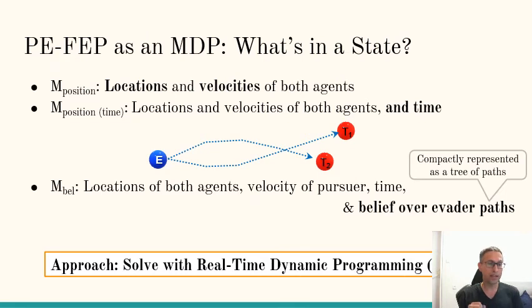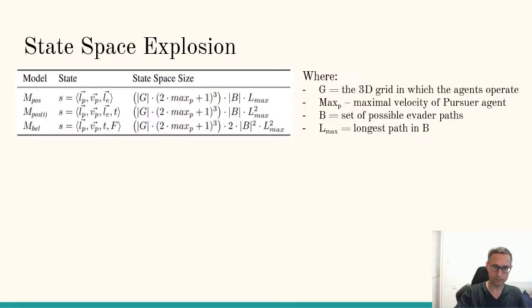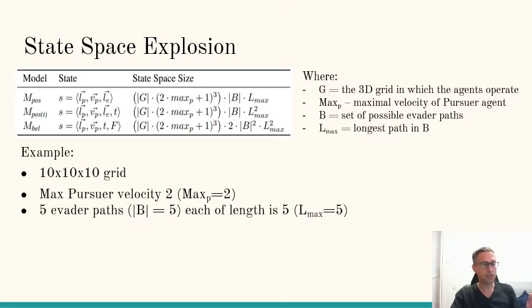But back to solving it. We can take each of these modeling and run RTDP to solve it. But the problem is that these modeling incur a very large state space. What you can see in this table is for each of these modeling choices, the size of the state space that it incurs. If you don't want to look at the math, let's look at an example.